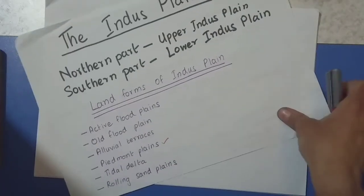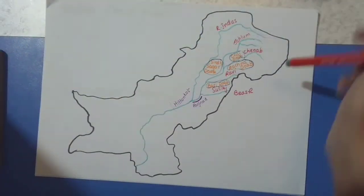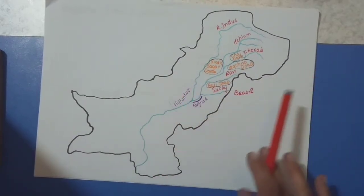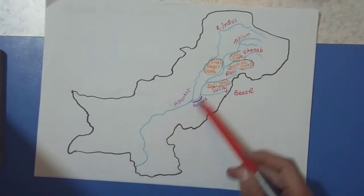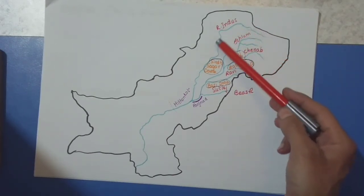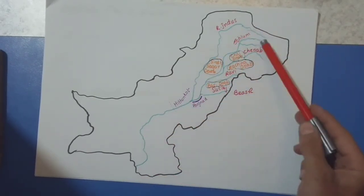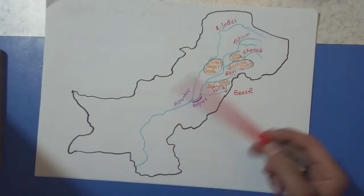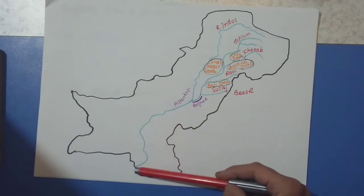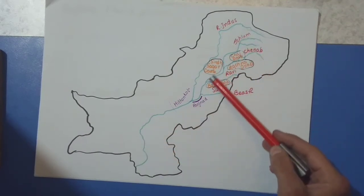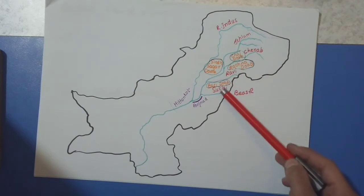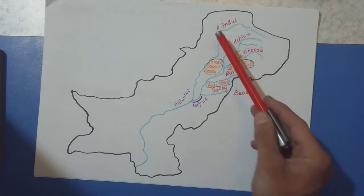Now let's look at the map of Pakistan. This is a brief and very simple outline map of Pakistan, and I have marked all the rivers as well. The blue lines are the rivers. This is the main river — that is the River Indus. There are various other channels joining the river, and all these channels are called the tributaries of River Indus.